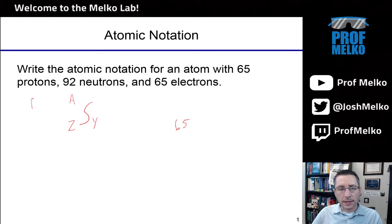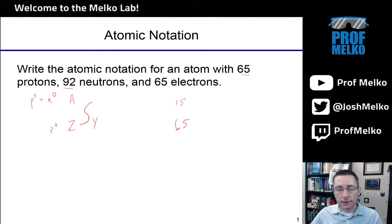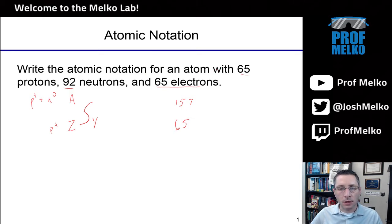A is the mass number. Remember, the mass number is protons plus neutrons, whereas the atomic number is just protons. So this superscript is protons plus neutrons: 92 and 65 gives us 157 as the mass number. The 65 electrons don't really matter here for atomic notation — since we have 65 electrons and 65 protons, the atom is neutral.